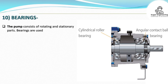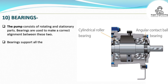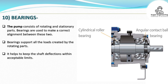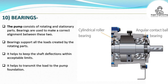Bearings: The pump consists of rotating and stationary parts, and bearings are used to maintain correct alignment between these two. Bearings support all the loads created by the rotating parts, help to keep shaft deflections within acceptable limits, and help to transmit the load to the pump foundation.